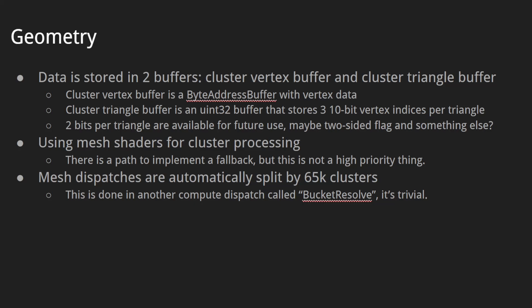The cluster triangle buffer is a UINT32 buffer that stores three 10-bit vertex indices per triangle, leaving 2 bits per triangle available for future use — maybe a two-sided flag or something like that. We're using mesh shaders for cluster processing. There is a path to implement a fallback, but it's not high priority. Mesh dispatches are automatically split by 65K clusters in each dispatch. This is done in another compute dispatch called bucket resolve, which is pretty trivial.